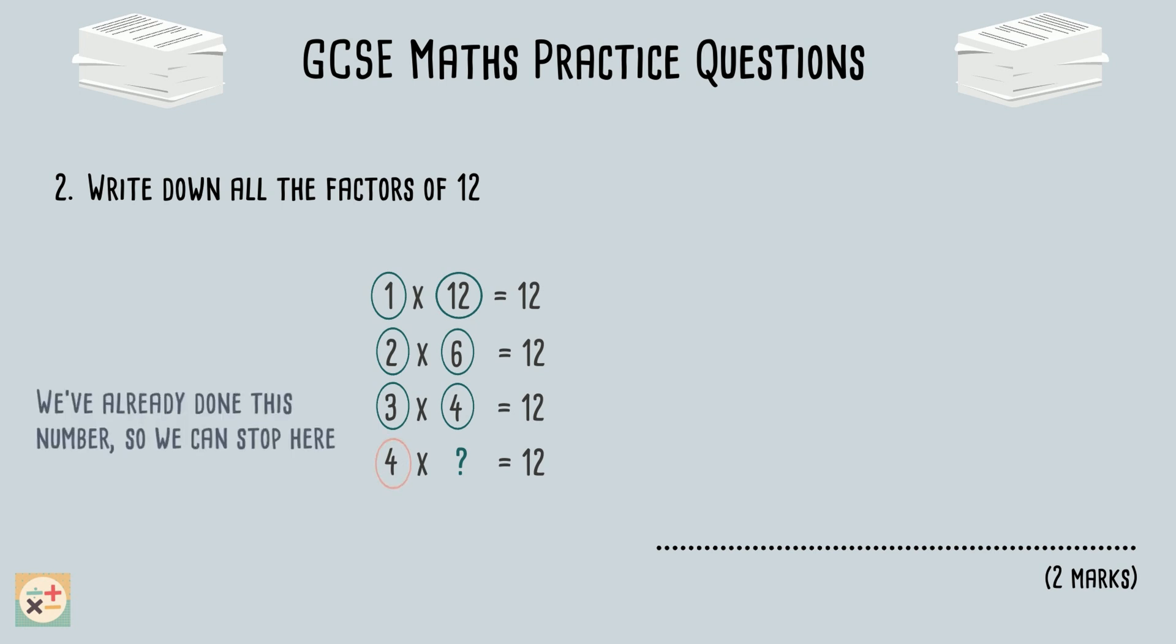We can repeat this until we reach a number which is duplicated. As we have already looked at the number 4, we do not need to carry on looking for more factors. We can be certain we have found them all. We can now list the factors we have found in our answer.